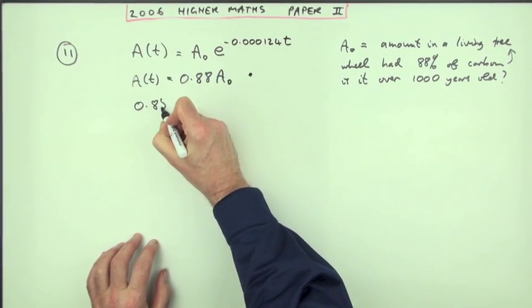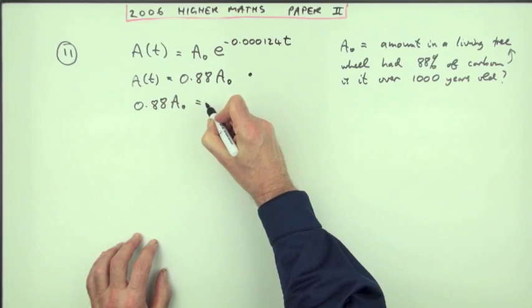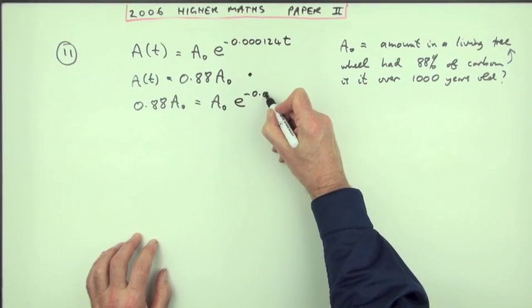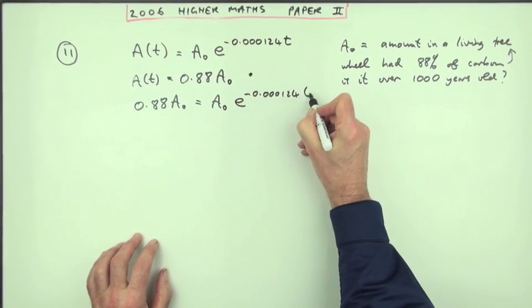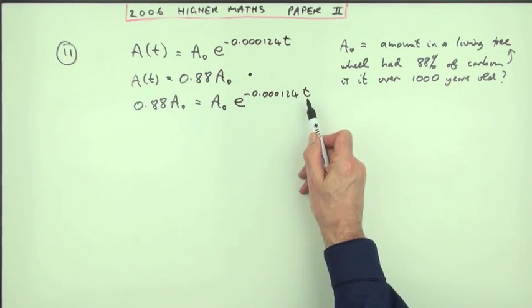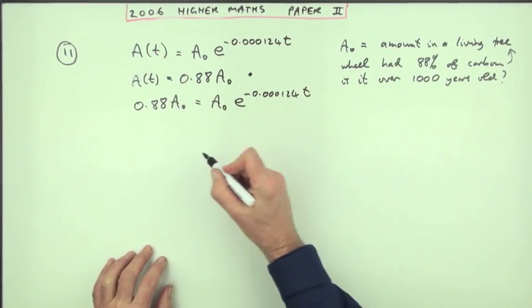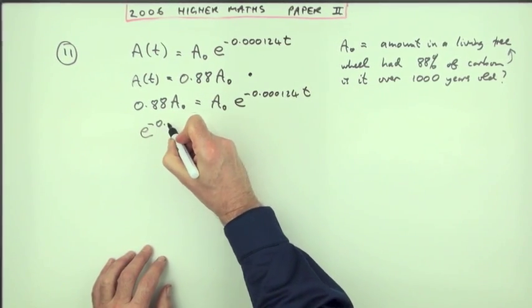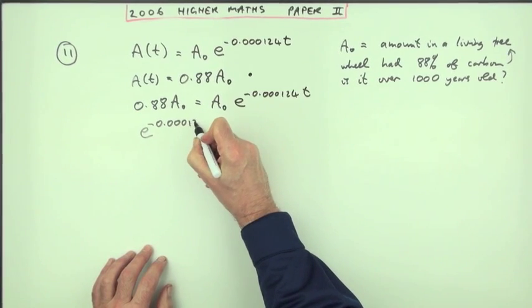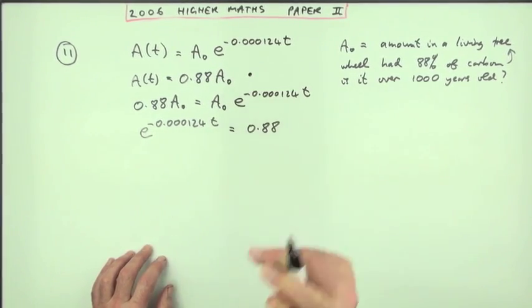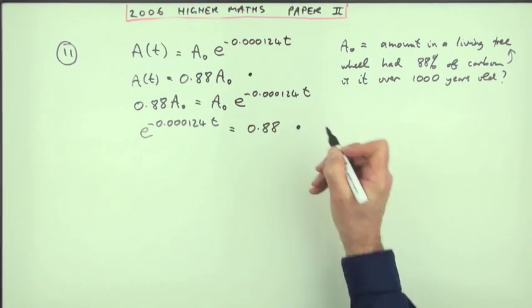So you've got 0.88 of the initial amount equals the initial amount times e to the negative 0.000124t. Now there's only one unknown because these amounts will cancel out. So you end up with this equation: e to the negative 0.000124t equals 0.88. Doing that gets the second mark.